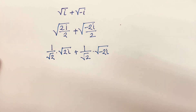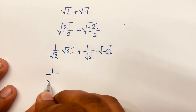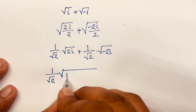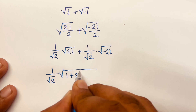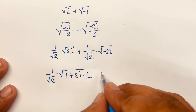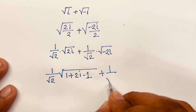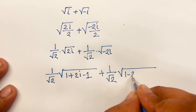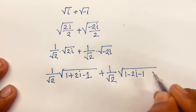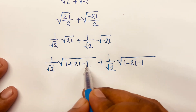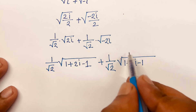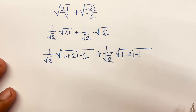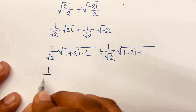We rewrite as 1/√2 · √(1 + 2i − 1) plus 1/√2 · √(1 − 2i − 1). Note that 1 − 1 = 0, leaving 2i in the first term, and 1 − 1 = 0 leaving −2i in the second term.